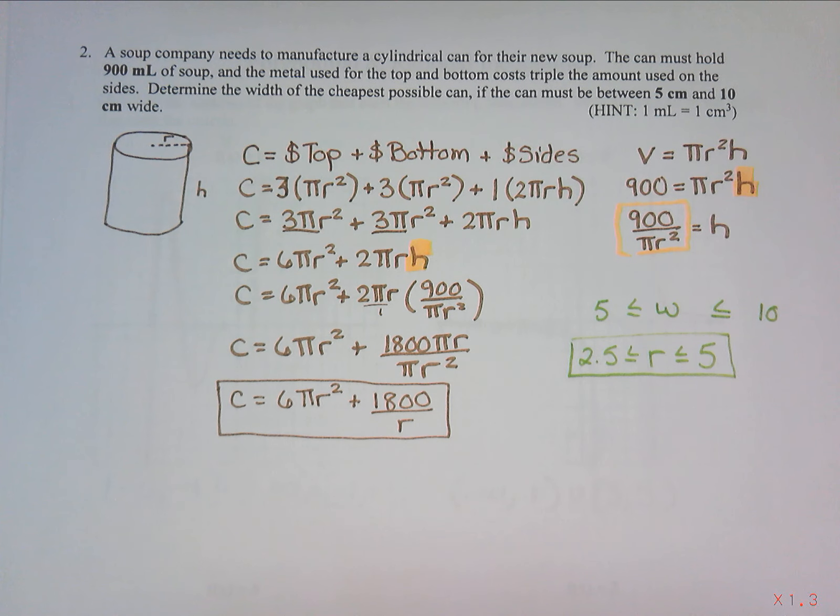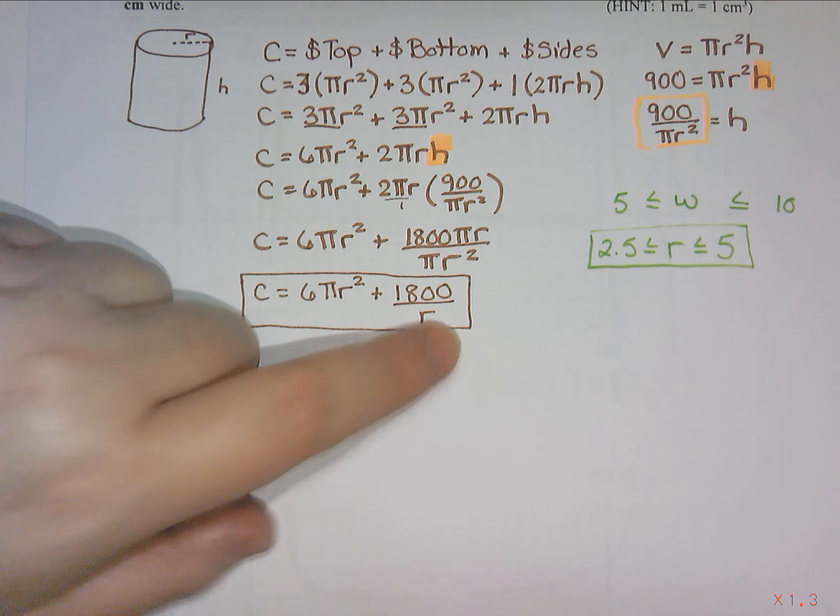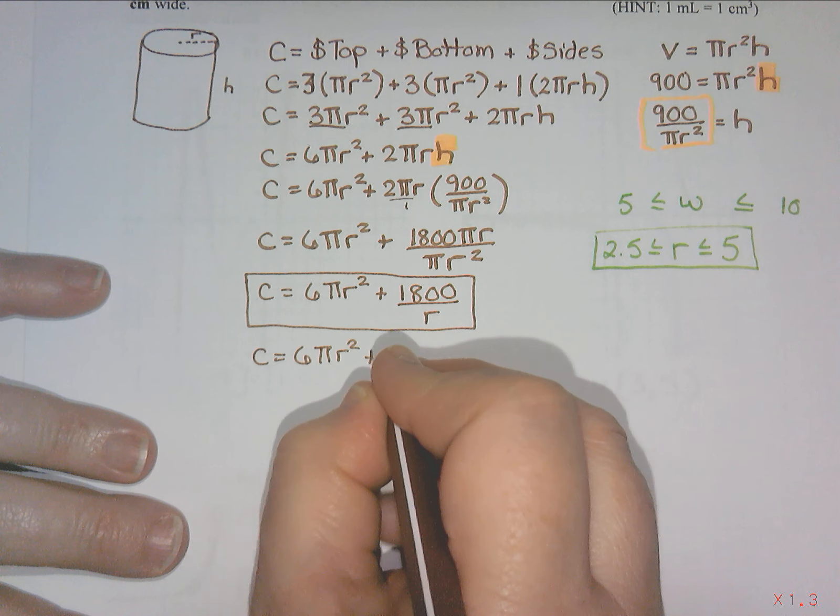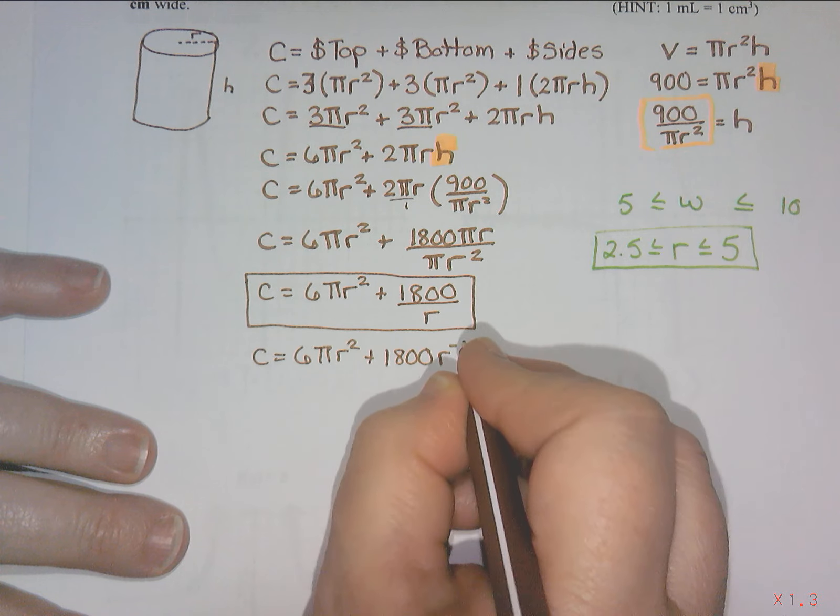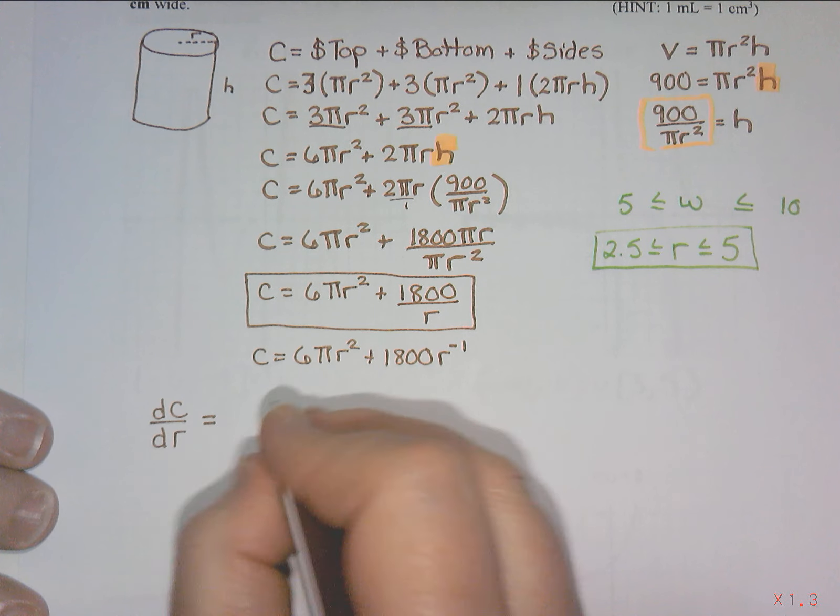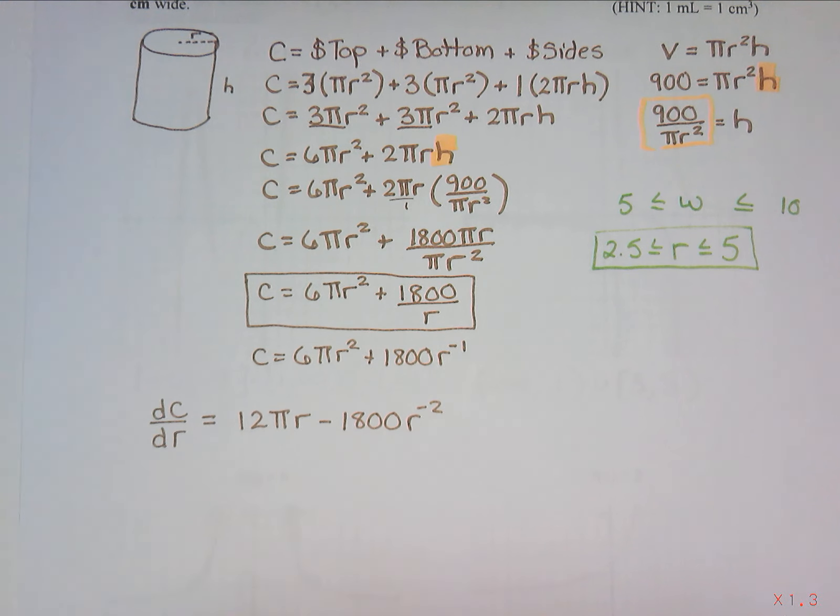My radius needs to be somewhere between 2.5 centimeters and 5 centimeters. In order to find our cheapest possible can, that is minimum, I am going to take the derivative. Before I take the derivative, I might write that with a negative exponent instead of a fraction. So my dc by dr or c prime is going to be 12 pi r minus 1800 r to the negative 2.